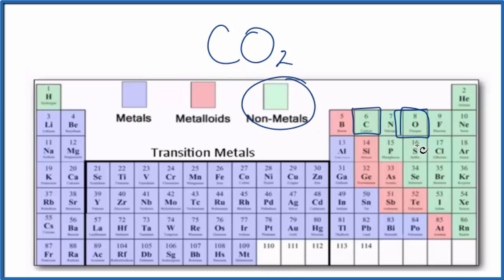So when we have two nonmetals, we have a covalent compound. So carbon dioxide, it's a covalent compound. But let's look at the Lewis structure to see what that means.